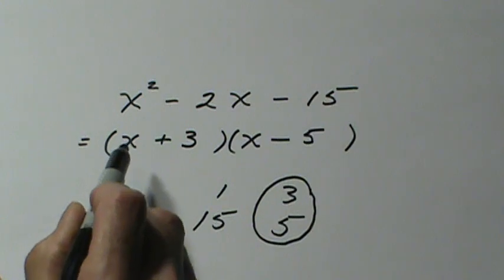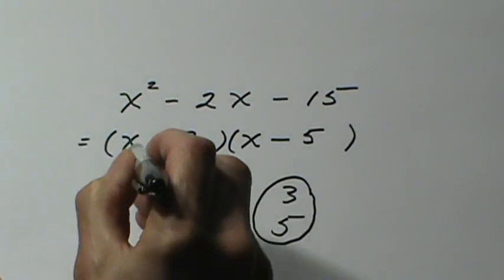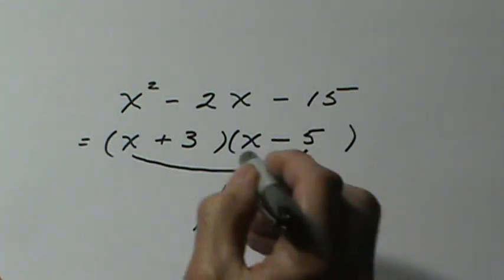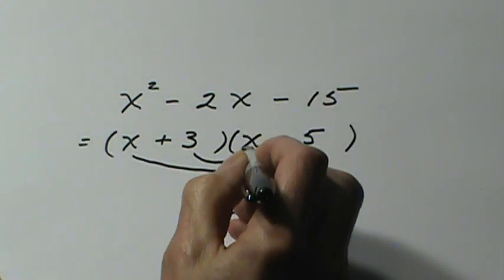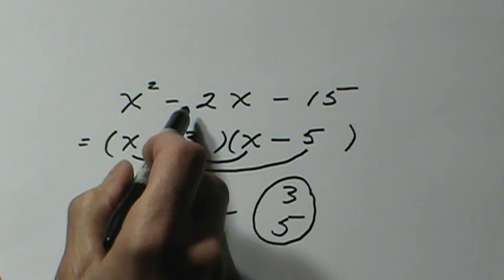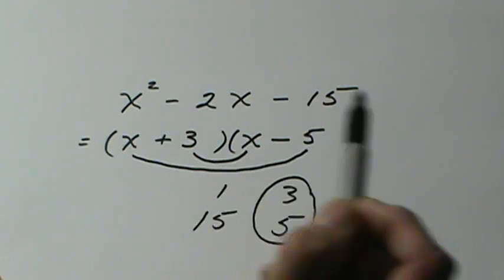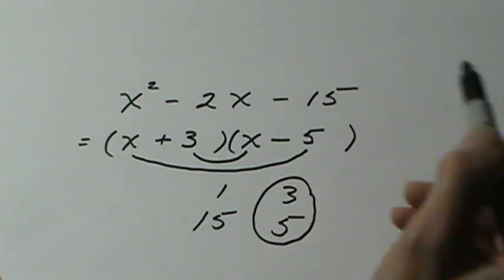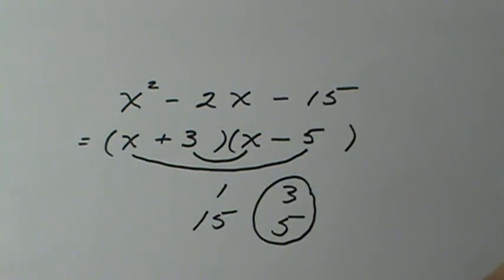Checking the whole thing: x times x is x squared. The outer product is negative 5x, the inner is plus 3x, that's what gives us the negative 2x in the middle. And finally positive 3 times negative 5 gives you negative 15. So that concludes the lesson on trinomials part 1.